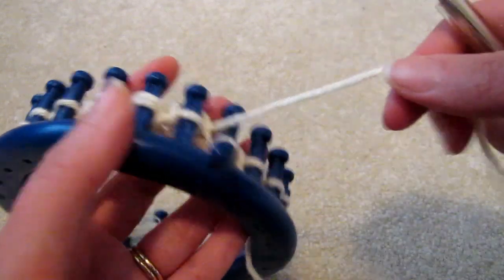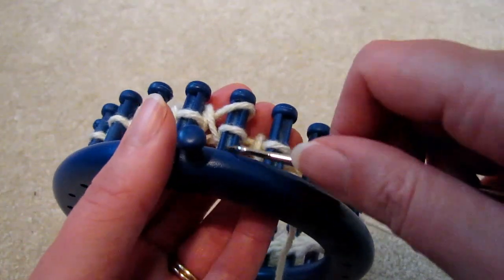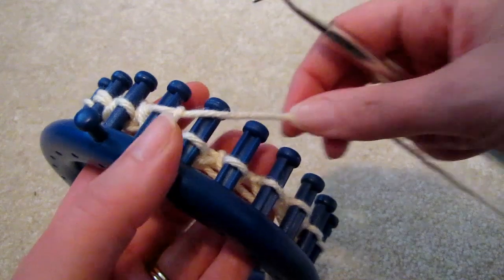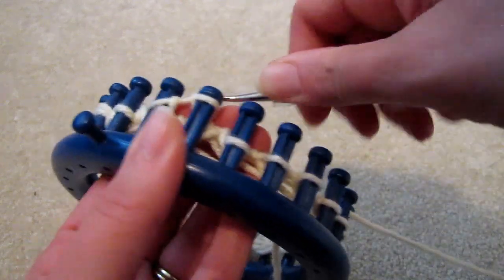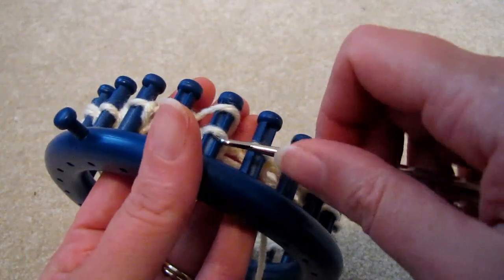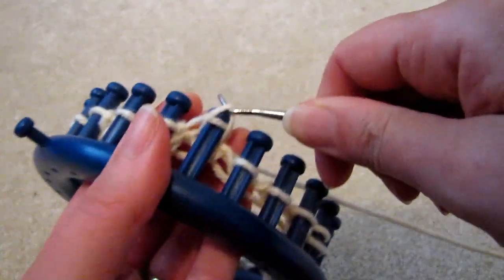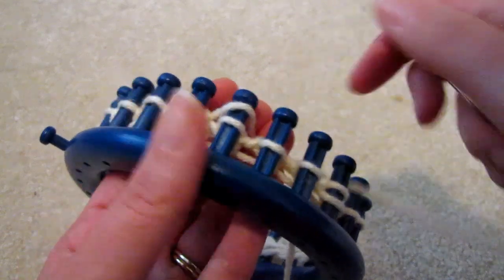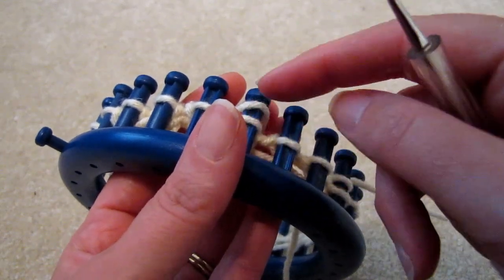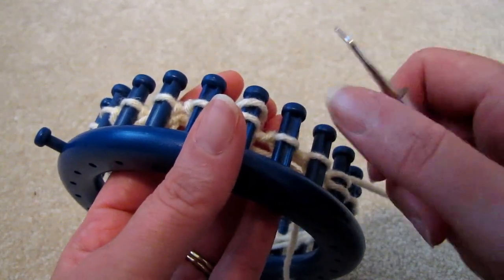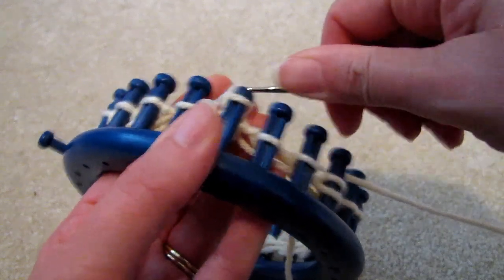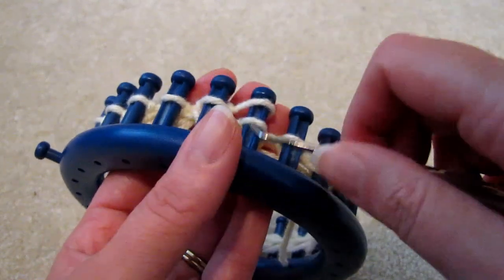The next two rows knit. And continue this pattern for about eight times. So in the end you'll have eight combinations of double E-wrap, knit, knit, double E-wrap, knit, knit. And end with a row of double E-wrap.